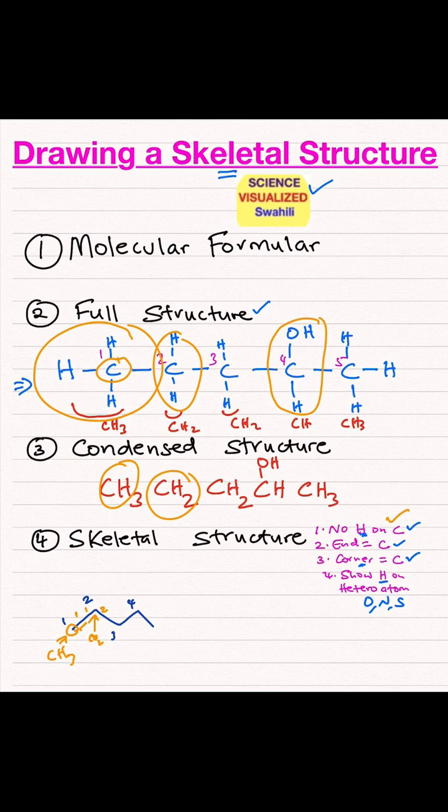So we need to show that. Remember we have to show hydrogens on heteroatoms like oxygen, so in that case on carbon number four, we will show oxygen and hydrogen, and that would be the skeletal structure.